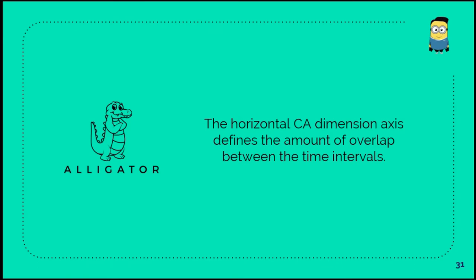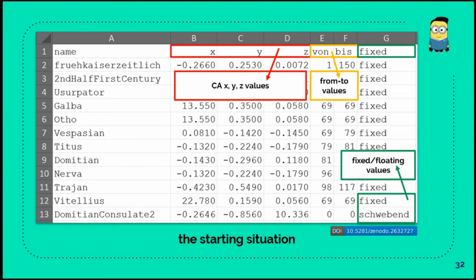The horizontal CA dimension axis defines the amount of the overlap between the time intervals, and so we have a starting situation in some kind of Excel sheet. You can see some Roman emperors, then the XYZ results from the CA and some starting and ending years, reigning years, and you know if the period is fixed or it's floating. We just look for the last one because this is floating, we don't know the start or ending year.